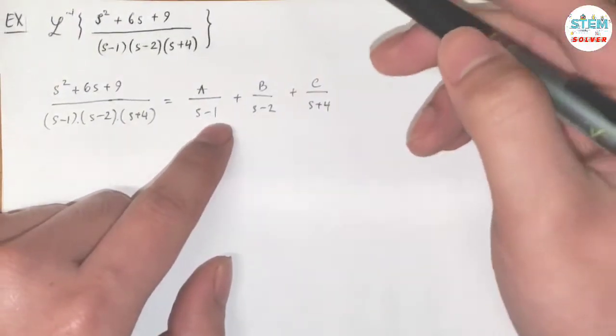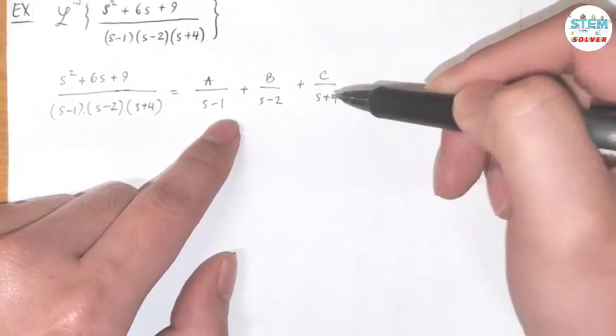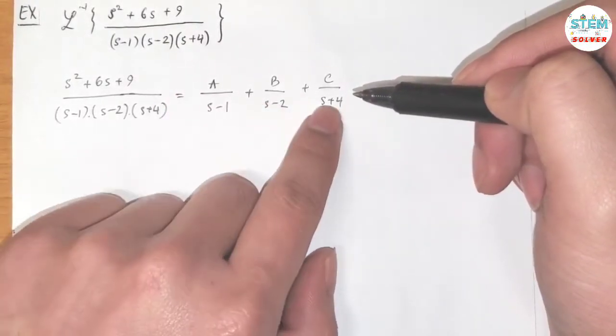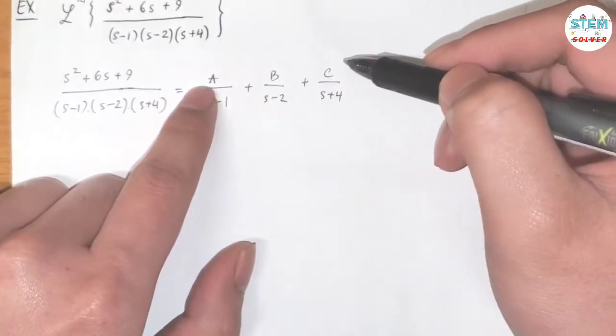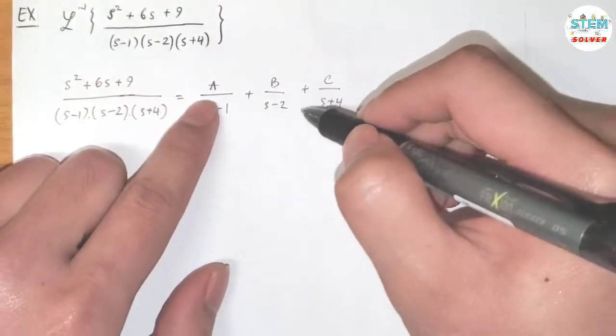If you combine all these, you will multiply this by this and this, and so on. We don't know A, B, C, but it will form this one, and our goal is to find A, B, and C.